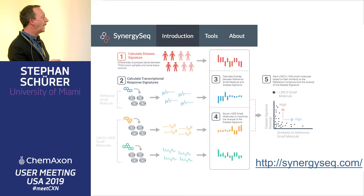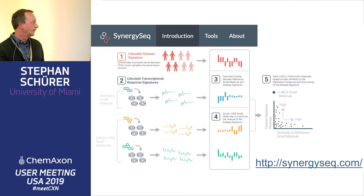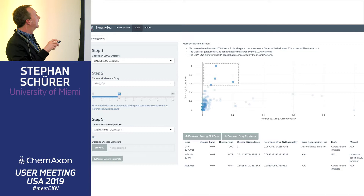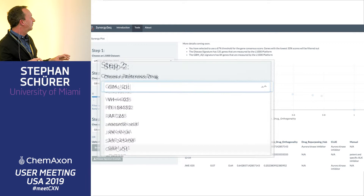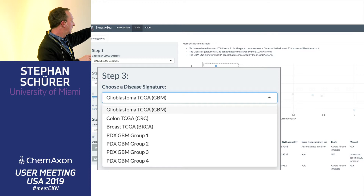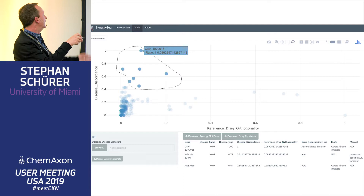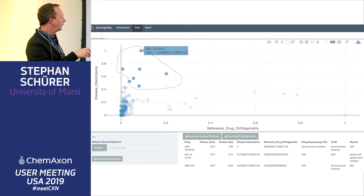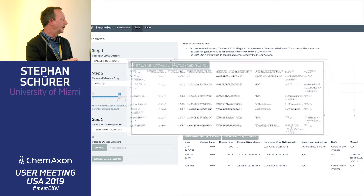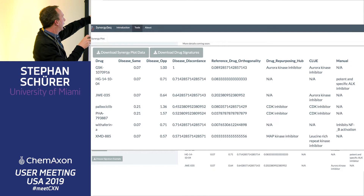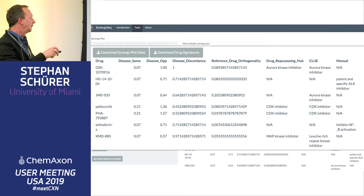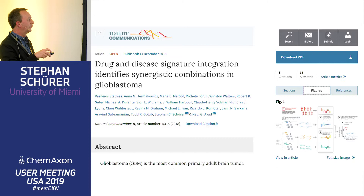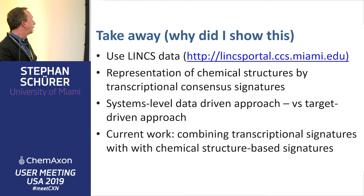We implemented this in an app called synergyseek.com. It works as a simple app: in the first step you select a dataset, in the next step you select your reference compound, then you select your cancer — glioblastoma in this case — and then you get the scatterplot showing disease discordance versus orthogonality to your reference drug. You can find those compounds and download them from the table. There's now also a link to the data portal, just implemented this morning. We published this together with Nagi recently, so I point you to that.